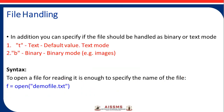In addition, you can specify if the file should be handled as binary or text mode. T for text is the default value, or text mode. B for binary — binary mode — for example, images.